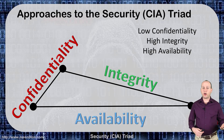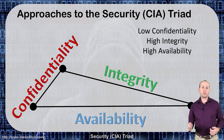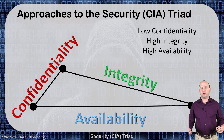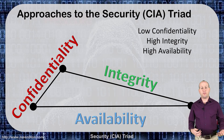Another way to look at this is low confidentiality, but high integrity and high availability. A good example of that would be a website. If you go to my website, I want you to be able to see the images and text I put there — meaning it has good integrity, it hasn't been changed — and I want it to be highly available. Anyone can get to it; no usernames or passwords needed because I just want you to be able to view it. So in this case, I have very low confidentiality but high integrity and high availability.